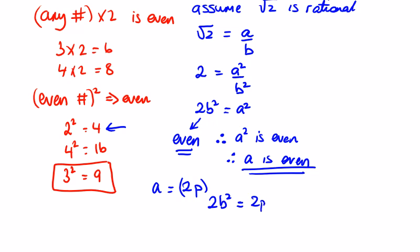which is now 2p squared. So 2b squared will be equal to 4 times this number squared, 4p squared, and we divide by 2. We can say that b squared would be equal to 2p squared.